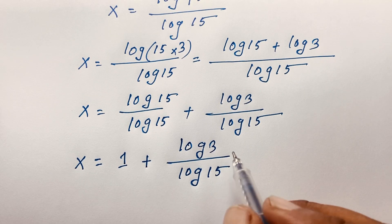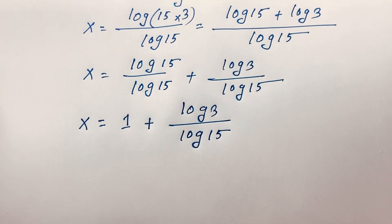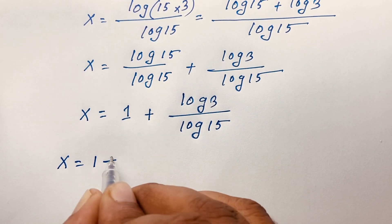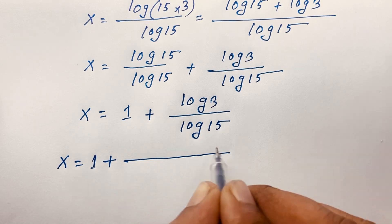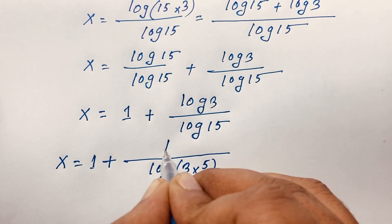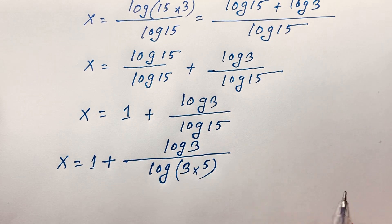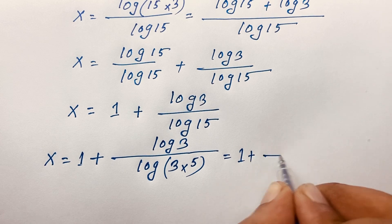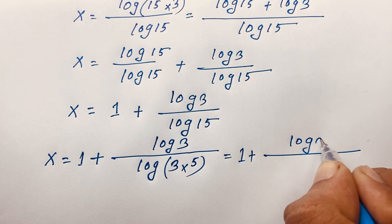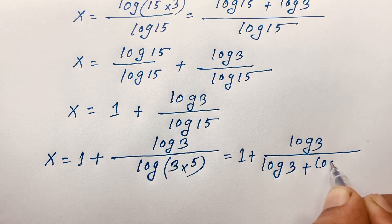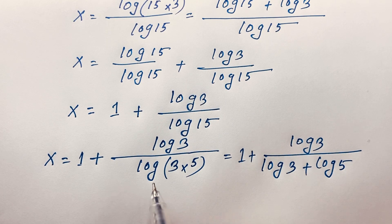Now I evaluate log 15 further. I write log 15 as log of 3 times 5, so the expression becomes x equals 1 plus log 3 over (log 3 plus log 5), again using the rule log(ab) equals log a plus log b.